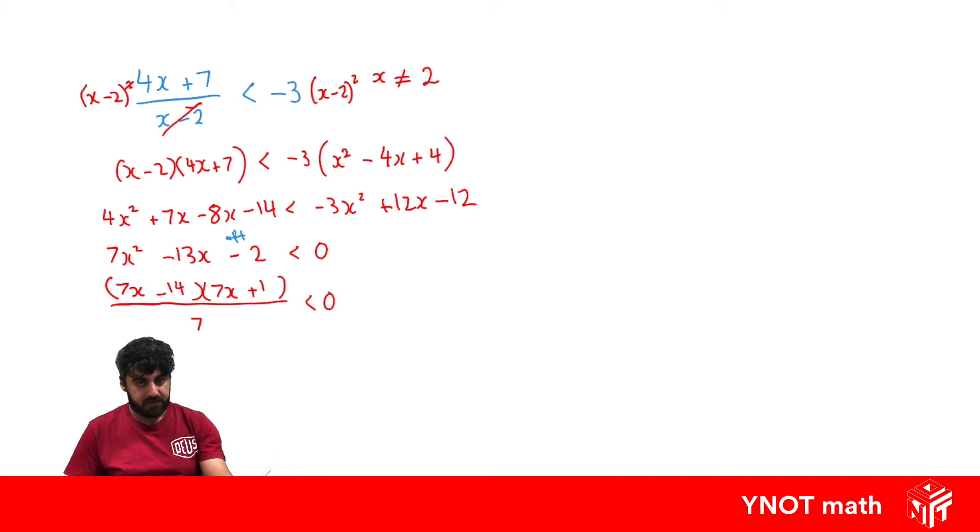Then we can factorize out a 7 in that first bracket, so we get x minus 2 times 7x plus 1 all over 7 is less than 0, and those 7s will cancel. So we've just got x minus 2 and 7x plus 1. So if these never factorize properly you could always use the quadratic equation to get your intercepts, but these ones are factorizing nicely.